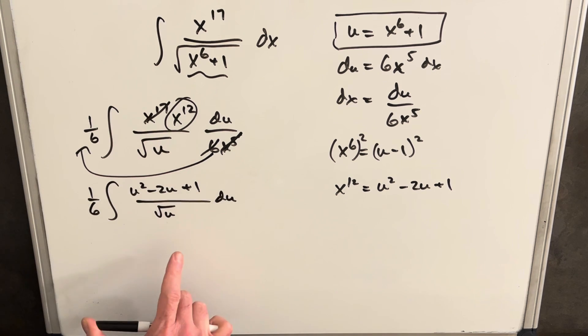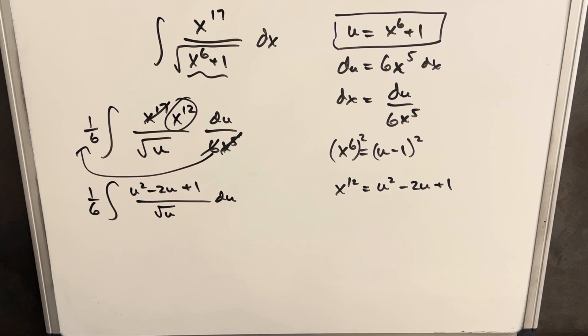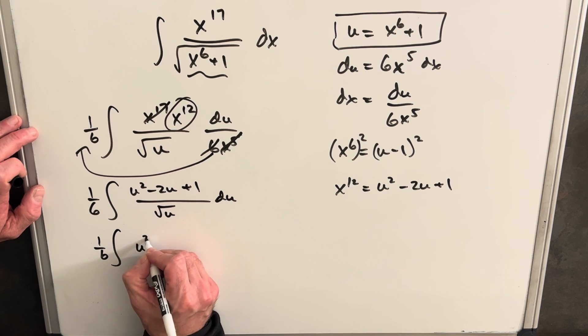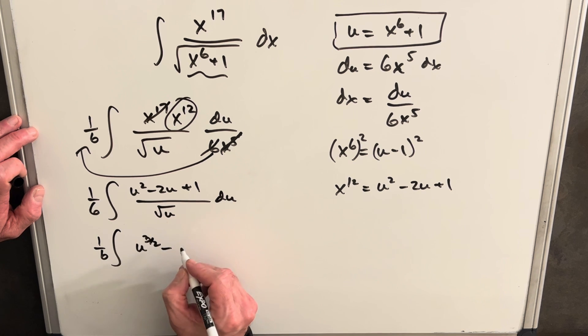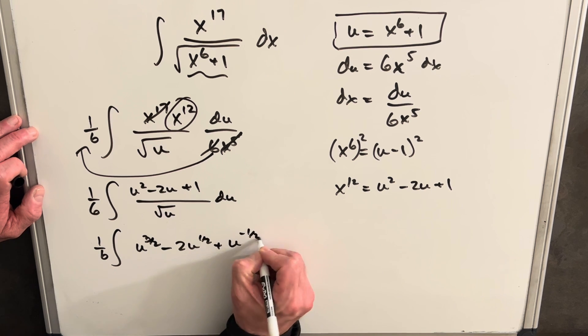And this is looking pretty good. So what we can do is we can break this into three separate terms, just dividing our square root of u into each of these. So we're going to have 1 6th integral of u to the 3 halves minus 2u 1 half. I'm writing it out this way so we can use the power rule when we integrate this.